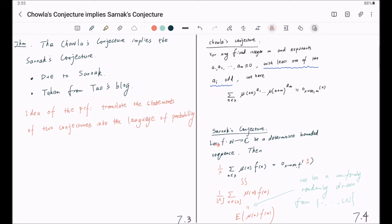In this way, we have transformed Sarnak's conjecture into the language of probability. And now, what about Chowla's conjecture? What is Chowla's conjecture in the language of probability?